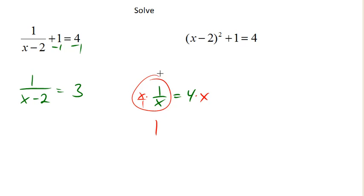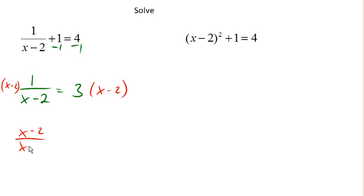So to solve this one, what do you think we're gonna do? We're gonna multiply both sides of the equation by x minus 2, because now this side becomes x minus 2 over x minus 2. This side, let's go ahead and distribute here, becomes 3x minus 6. And x minus 2 over x minus 2 is just 1.